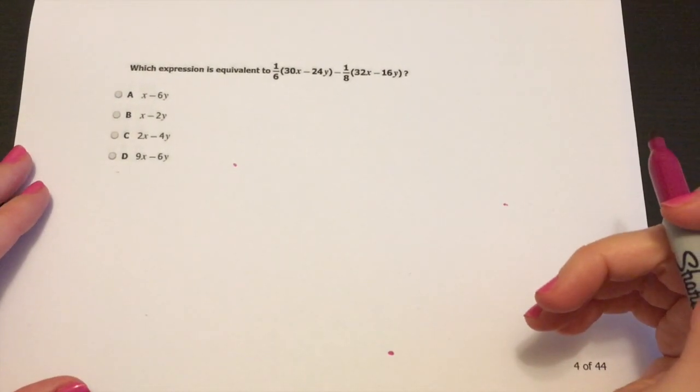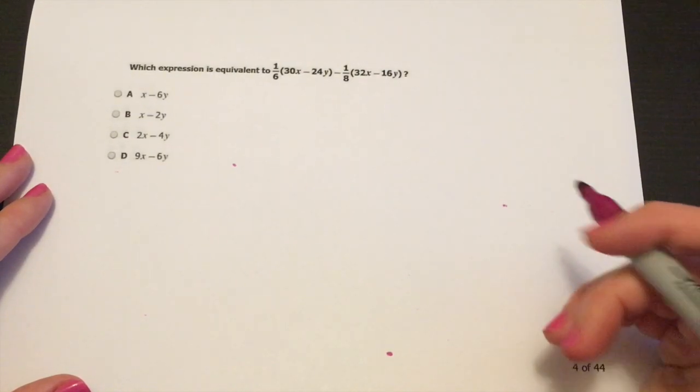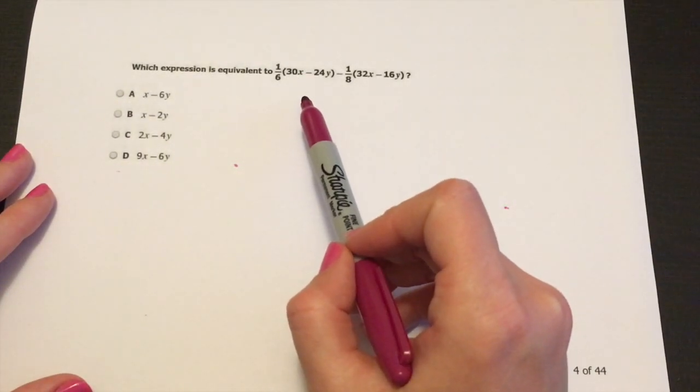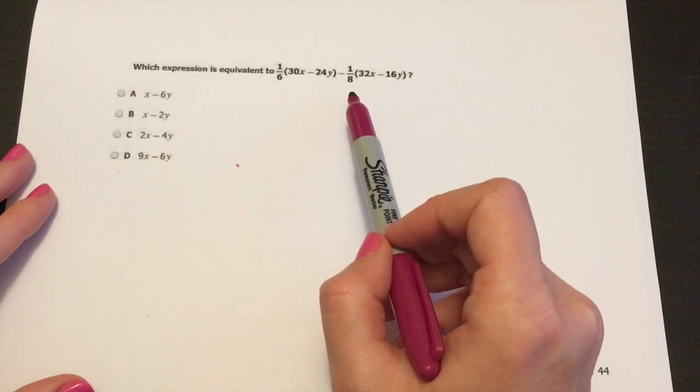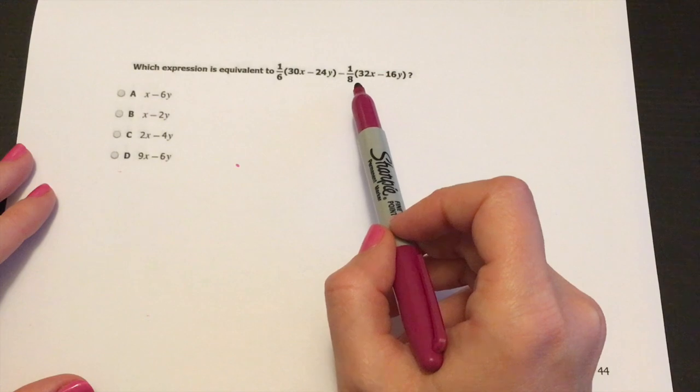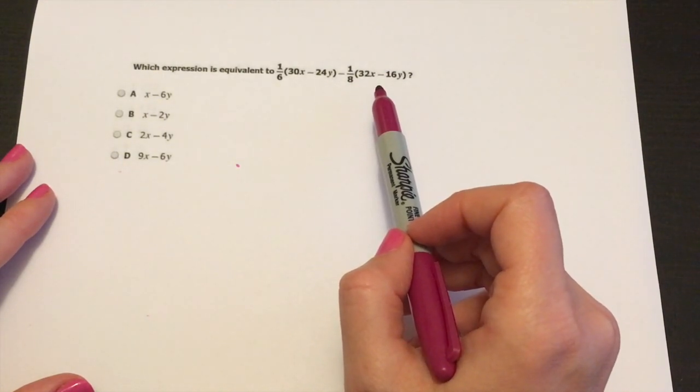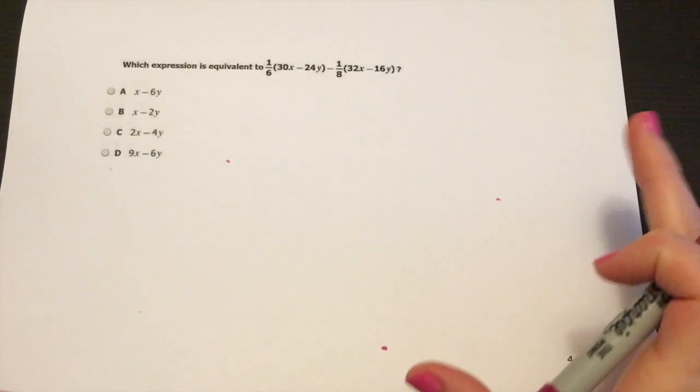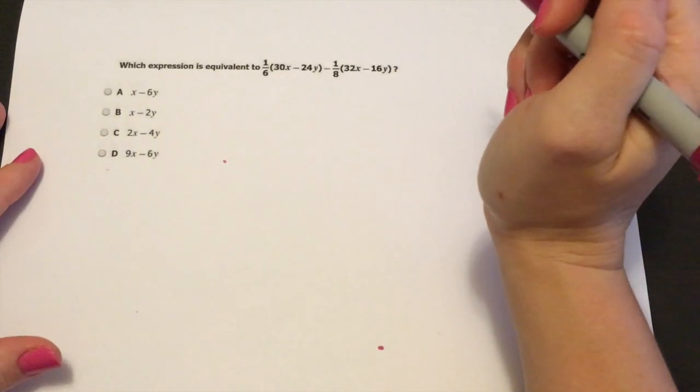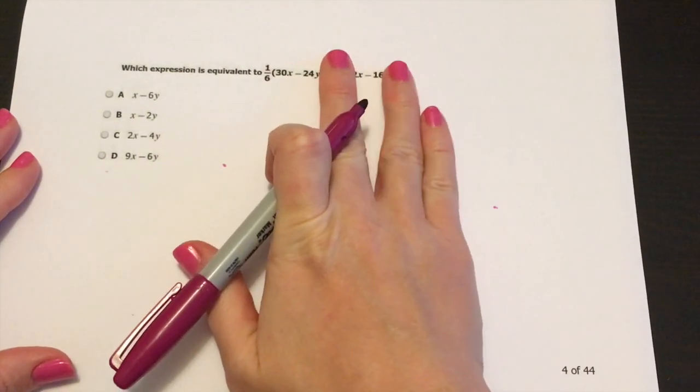All right. Which expression is equivalent to one sixth and then you have the parentheses here, 30 X minus 24 Y minus one eighth. And then you have parentheses 32 X minus 16 Y. All right. If this were me solving this, and it is as of right now, I would break this up first and look at each of these individual. So let's look at just this part of the problem first.